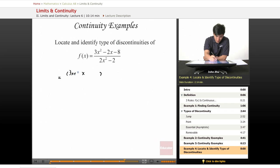3x plus 4, x minus 2. So 3x times x, 3x squared. 4x minus 6x is negative 2x, minus 2 times 4, which is negative 8.